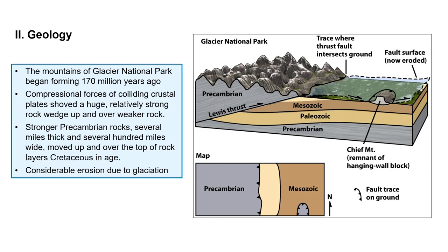Let's look at this diagram. Here is Glacier National Park and here is what's called the Lewis Thrust Fault. It's a low angle thrust fault — a low angle reverse fault — where you can see that the Precambrian rocks have been thrust up and over some younger rocks. Here are the corresponding Precambrian rocks on the footwall of the Lewis Thrust Fault, deeply buried beneath Paleozoic, Mesozoic, and Cenozoic rocks. There is also a little exposure of Precambrian rock here due to erosion on the footwall, and that's called Chief Mountain. If you took 101 online, you also looked at some glacial features at Chief Mountain.